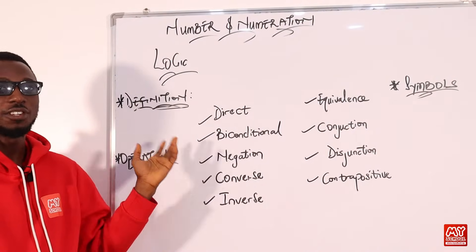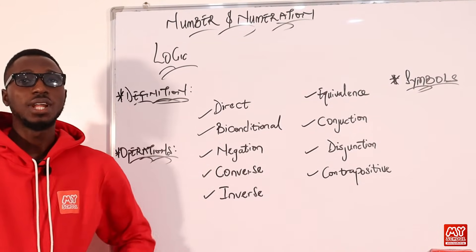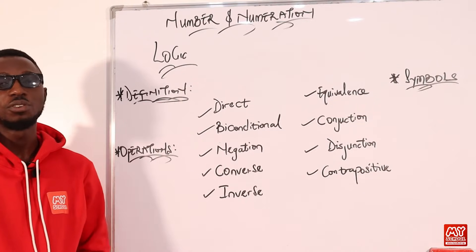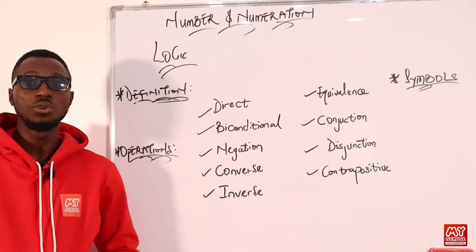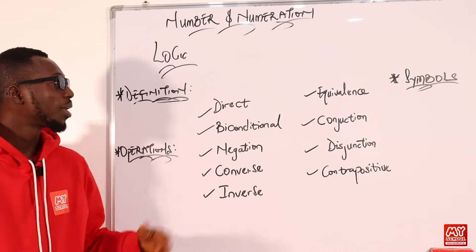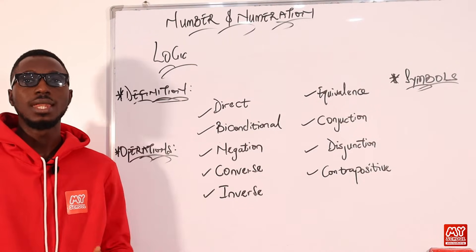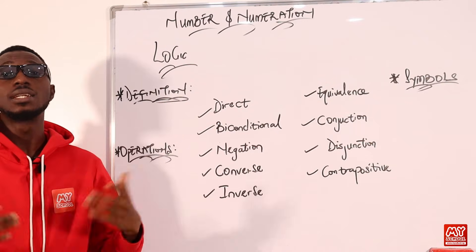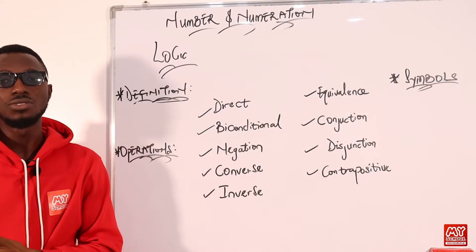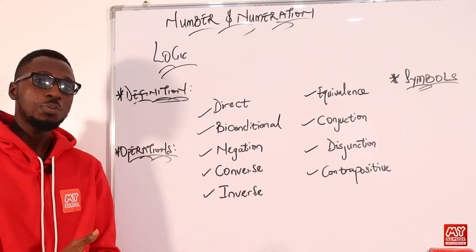We have the definition, the operations attached with logic, and the symbols that should be identified when it comes to logic. Under the concept of logic, if you want to define logic, you have to tap it from the root word logos, which means study, discuss, or reason. So a proposition is a statement that relates a sentence giving a declaration or giving information about something — a statement that declares something. And this declaration, you can say it is true or it is false.